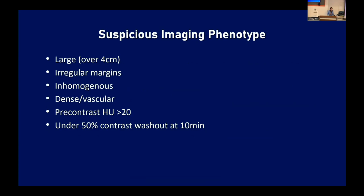Once confirmed, look at imaging — CT scan is most common for the adrenal gland. With pheochromocytomas, we often see a large mass greater than four centimeters, usually with irregular margins, very inhomogeneous, dense, and vascular. Hounsfield units — which compare density to the liver — will be high, generally greater than 20. If you have a contrast study, you'll see very low washout at 10 minutes.